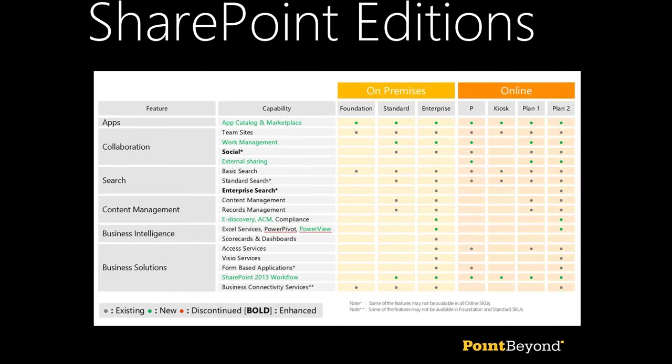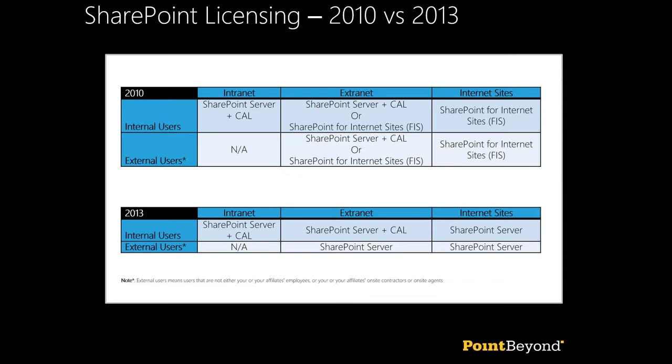One of the bigger changes going from SharePoint 2010 to 2013 is licensing — and somewhat unusually for Microsoft, they've actually made it simpler. There used to be an additional licence for FAST Search; if you wanted the high-end FAST search engine in 2010 you had to buy separate licences. That's now gone, and I'll talk more about search functionality later in the session.